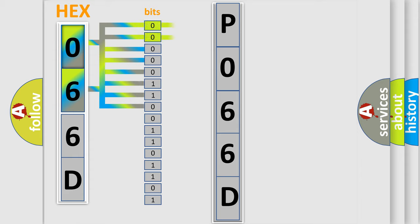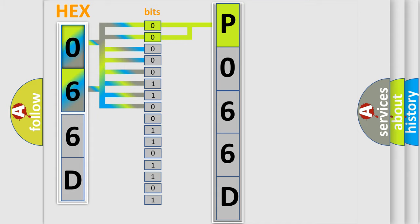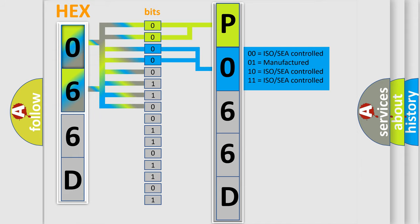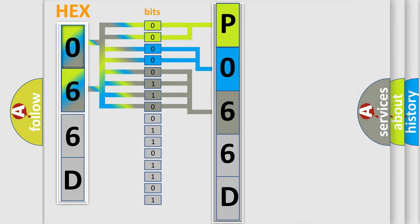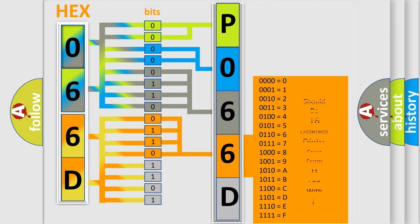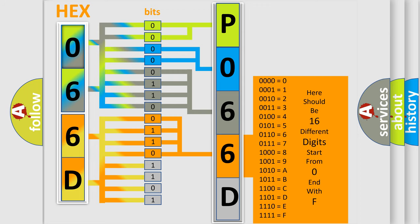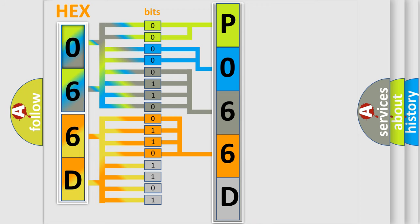By combining the first two bits, the basic character of the error code is expressed. The next two bits determine the second character. The last bits of the first byte define the third character of the code. The second byte is composed of a combination of eight bits: the first four bits determine the fourth character, and the last four bits define the fifth character. A single byte conceals 256 possible combinations.